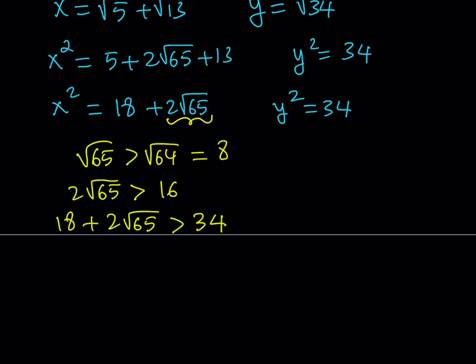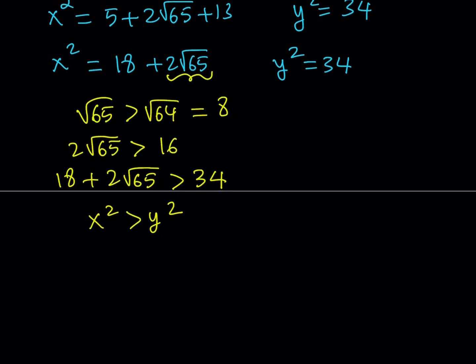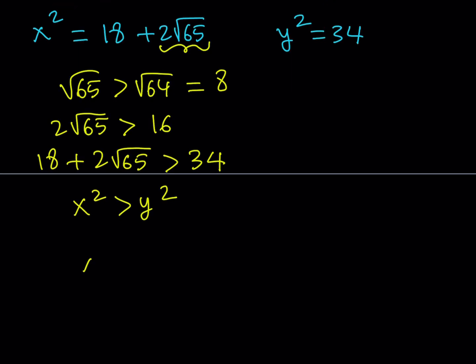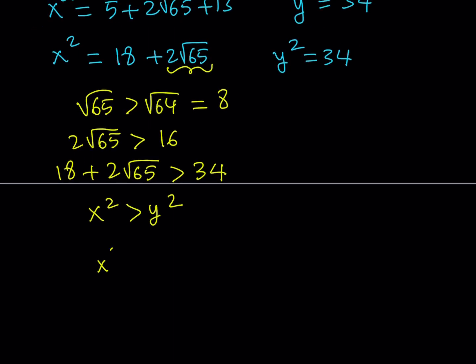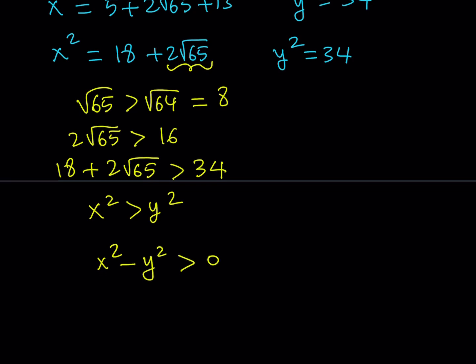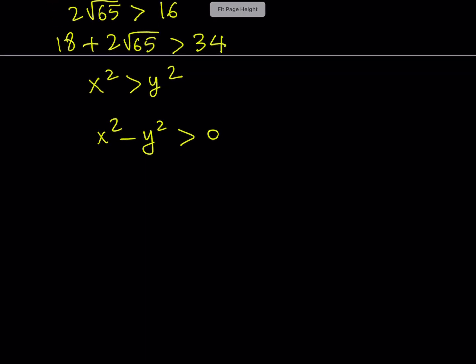This means that x squared is greater than y squared. Now how do you use this to compare x and y? Let's put them on the same side: x squared minus y squared is greater than 0. This is the difference of two squares, so it can be factored. We can write it as (x plus y) multiplied by (x minus y) is greater than 0.